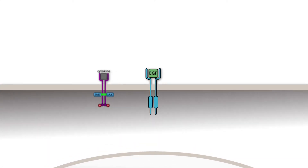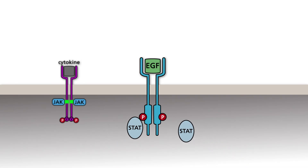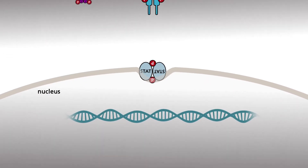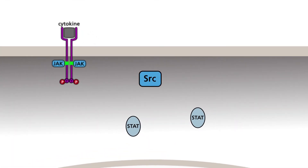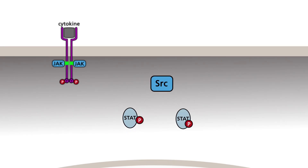STATs can also be phosphorylated by oncogenic kinases that are not members of the JAK-STAT pathway. In tumors of the head and neck, for example, the pathway is activated after phosphorylation of STATs by the EGF receptor. In melanomas, the pathway is activated after phosphorylation of STATs by Src.